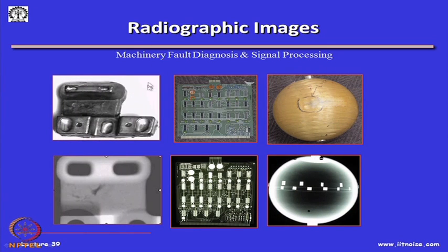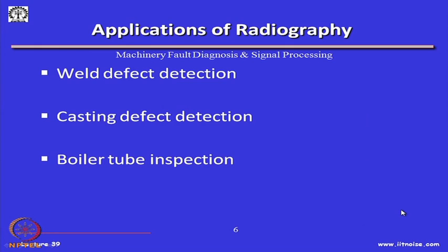These are some radiographic images of certain components — various machine components. You can see internal metal systems and notice the density difference. IC chips full of denser material appear as white objects in the x-ray image. These are how radiographic images of machine components help us understand what is inside a material. Applications of radiography include weld defect detection, casting defect detection, boiler tube inspection, and industrial security systems such as screening baggage to find density differences.